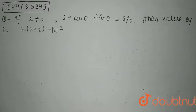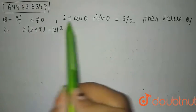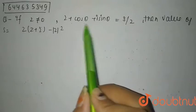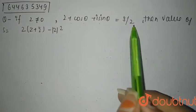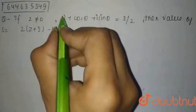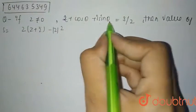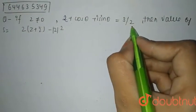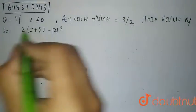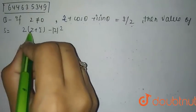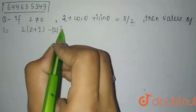Hello everyone. Our question is: if z is not equal to 0 and z multiplied by (2 + cosθ + i·sinθ) is equal to 3 by z. Then find the value of z into (z + z conjugate minus mod z squared).